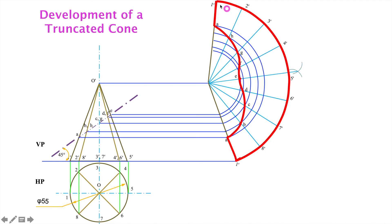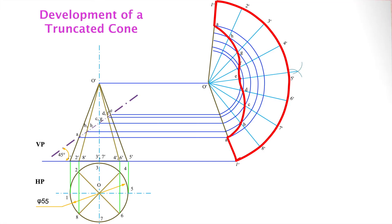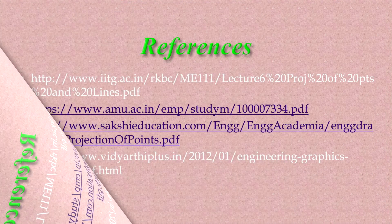Finally, we have drawn the development of the truncated cone. Means if we fold this surface, then we are getting this type of truncated cone. Truncated means cut from here and remove this part — it is a hollow cone. These are all the layer references that I have used to prepare this video.